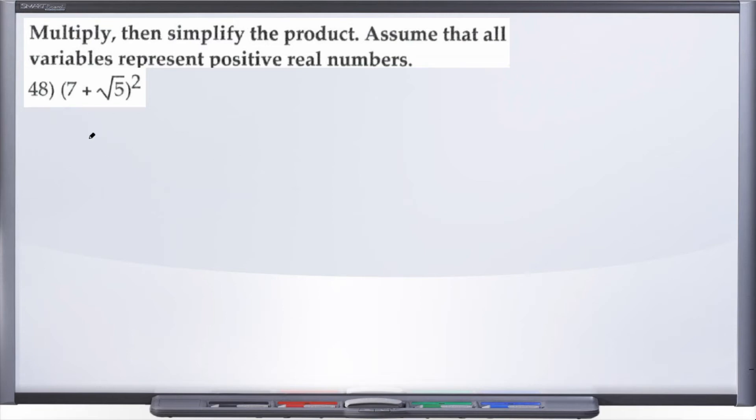All right, 48, we're in the same section, we're still multiplying, and they've given us the quantity 7 plus radical 5 squared.